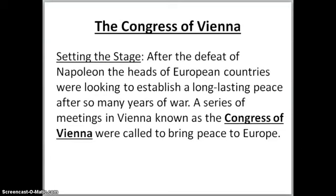Welcome back. This set of notes is going to cover just the Congress of Vienna, and after you're done with these notes, we will do a map in class. So the Congress of Vienna — let's go ahead and set the stage. After the defeat of Napoleon, the heads of European countries were looking to establish a long-lasting peace after so many years of war. A series of meetings in Vienna, known as the Congress of Vienna, were called to bring peace to Europe.